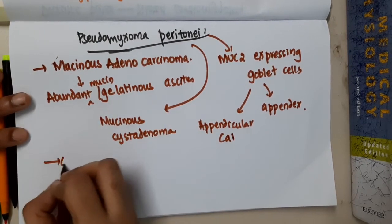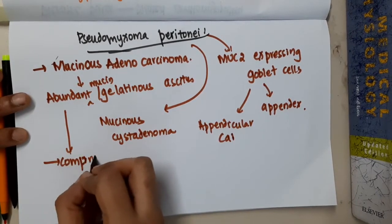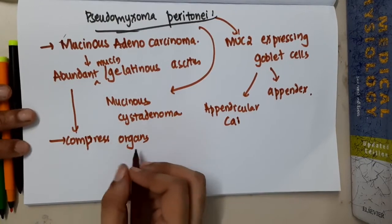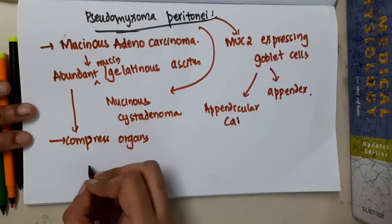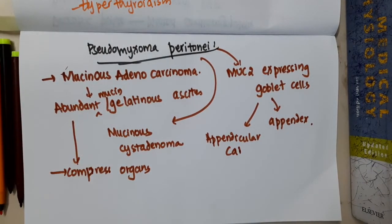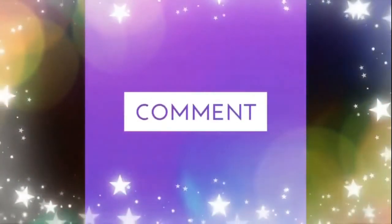These mucinous gelatinous ascites compress the organs and cause the respective symptoms of compression. This is about pseudomyxoma peritonei. Thank you for watching.